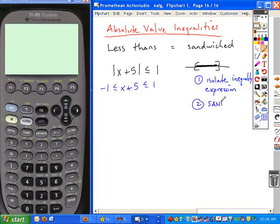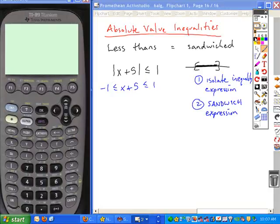The next step is to sandwich the expression, and you're going to sandwich that expression by putting what's given and the opposite of what's given. And then you're just going to solve it as this compound inequality. What kind of compound inequality is this? It's an and inequality, right?